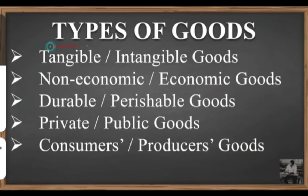The third type is durable and perishable goods. Durable goods can be used for a longer period of time and used repeatedly. Examples include shoes, clothes, television, and refrigerators — goods we can use for years. These are not perishable within a short time; they can last one year, two years, three years, or five years accordingly. These goods are termed durable goods.